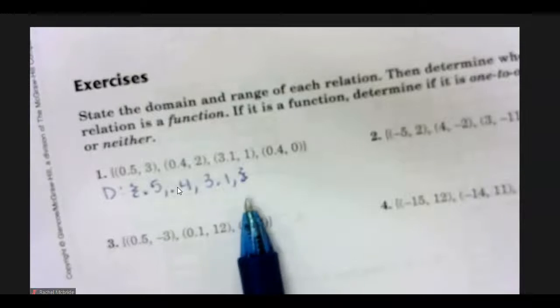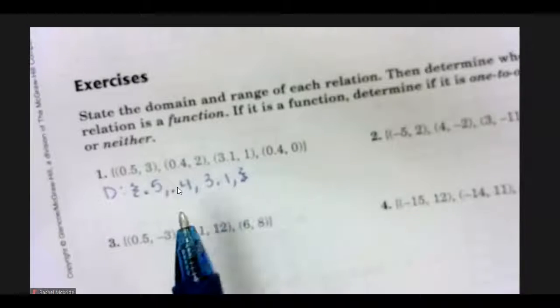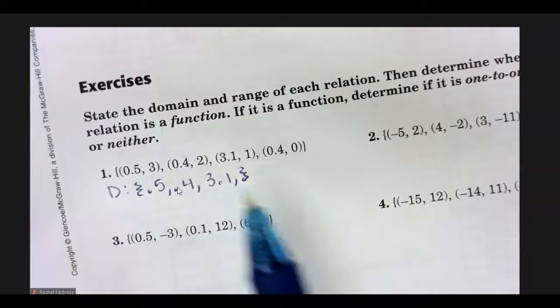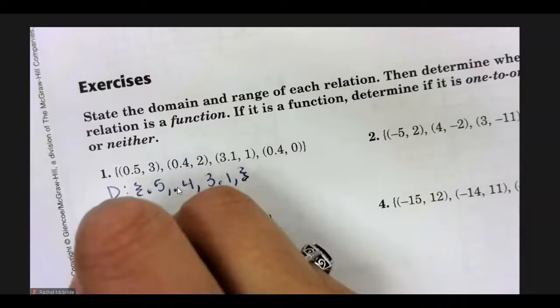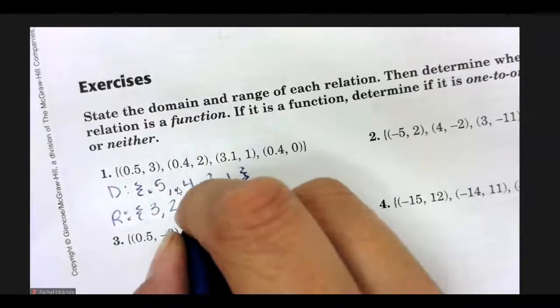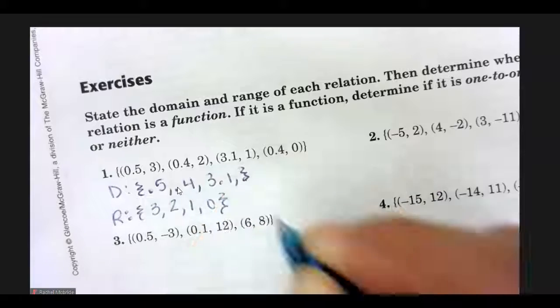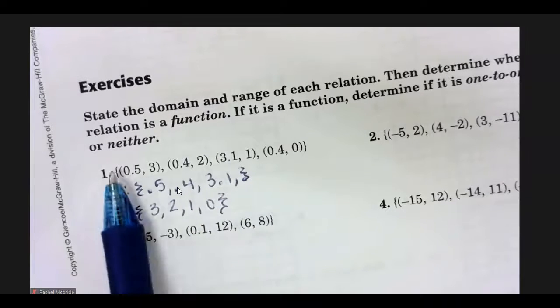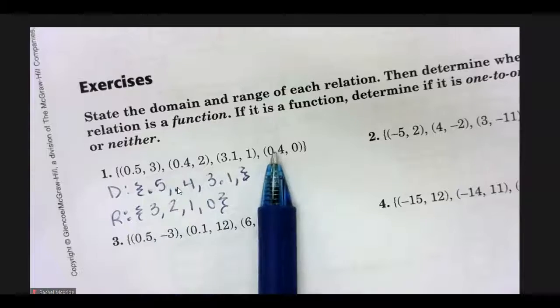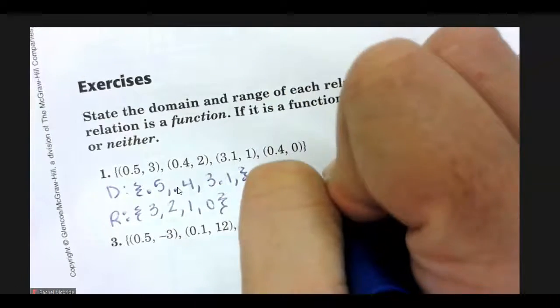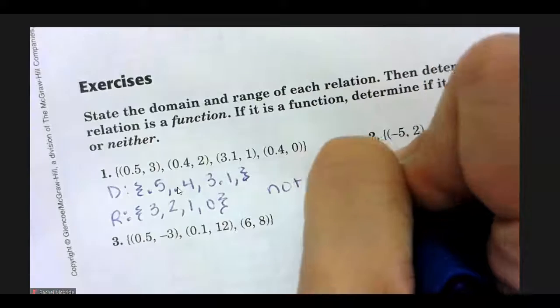We never list a duplicated domain value in our domains. So even though 0.4 is in the domain twice, I don't list it twice. And this is not a function because I have two x's repeated. If it's not a function, it's not one to one or onto.